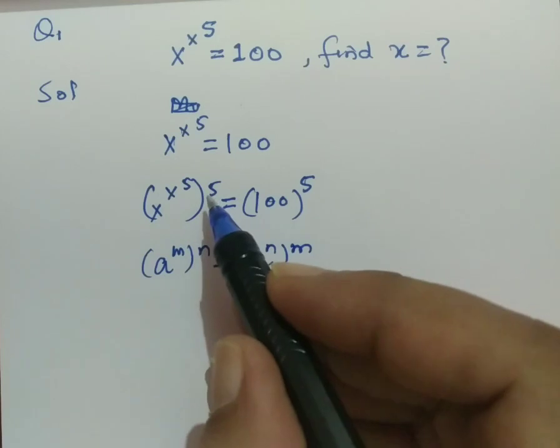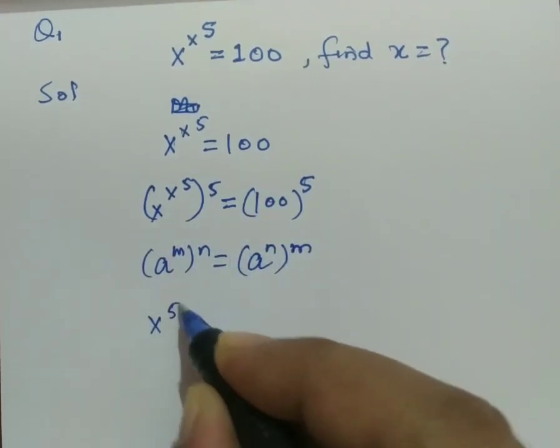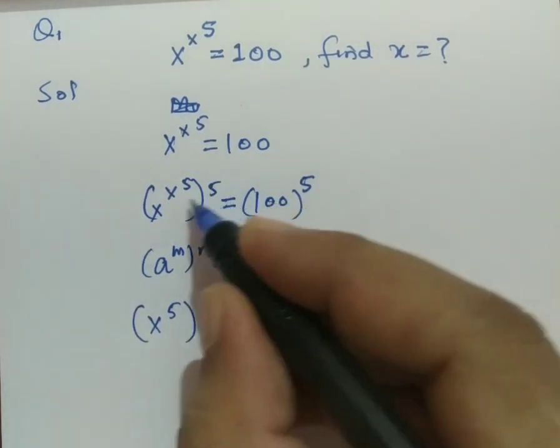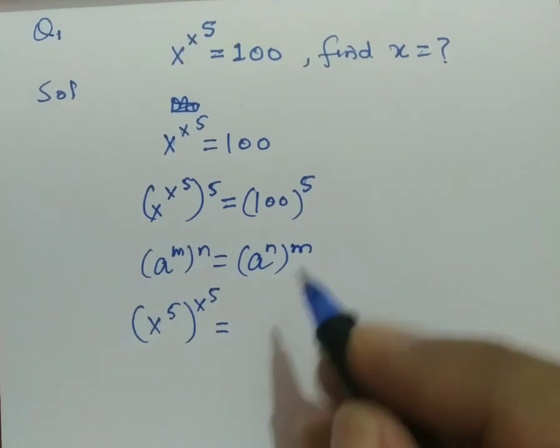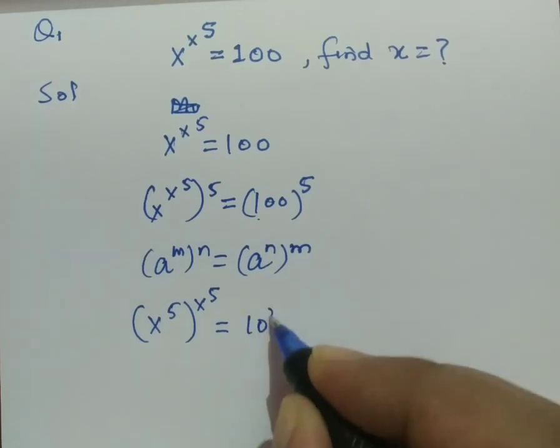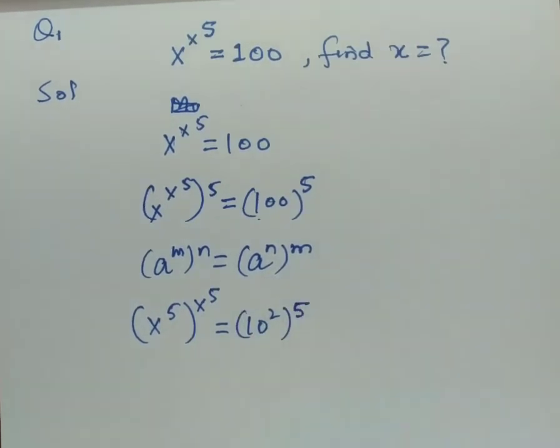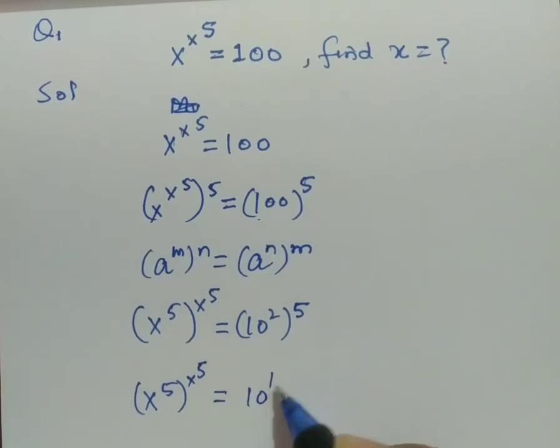So this can be written like this: x raised to the power 5, this power becomes here, and x raised to the power 5. So I can also write this 100 as 10 raised to the power 2, whole to the power 5. So x raised to the power 5, and the exponent is also x raised to the power 5, equals 10 raised to the power 10.